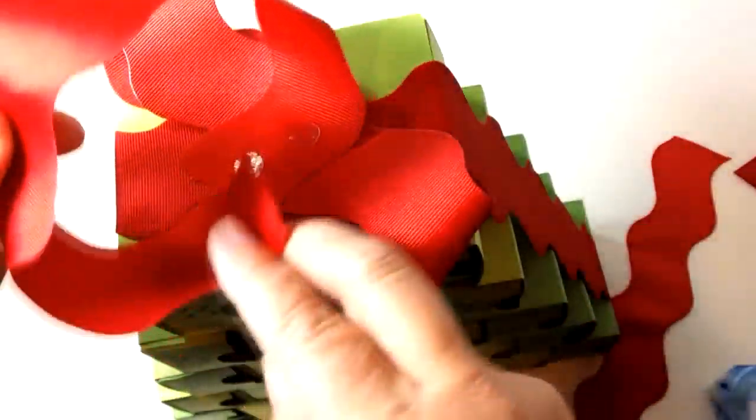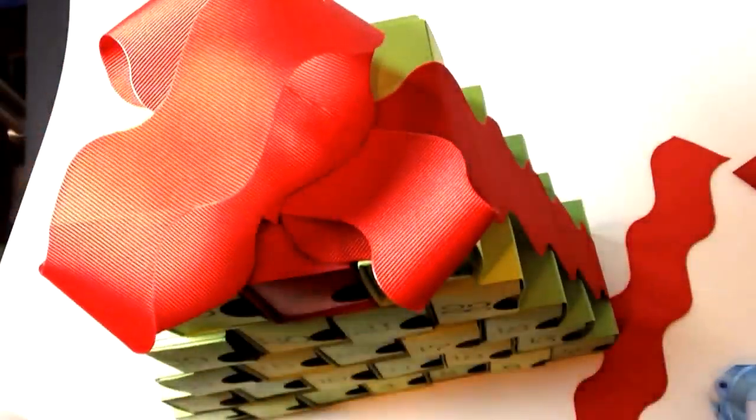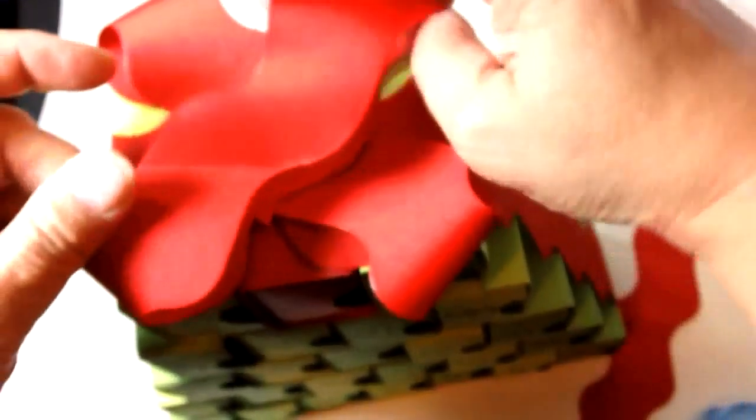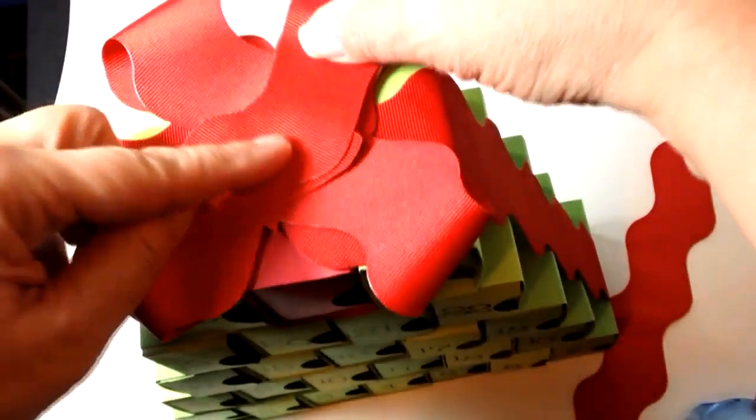You just make a loop out of this length of ribbon, then you're going to put more glue dots in it and stick it down right where you want it. Now I'm just going to do a crisscross, but you could also do the other two directions and make this a bigger embellishment on the top.